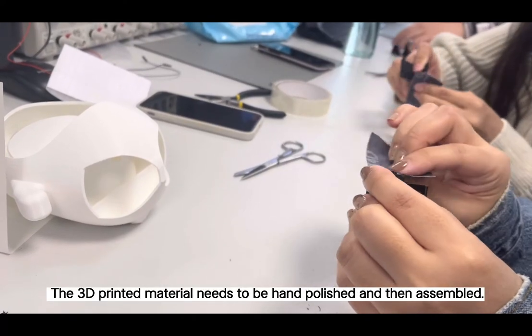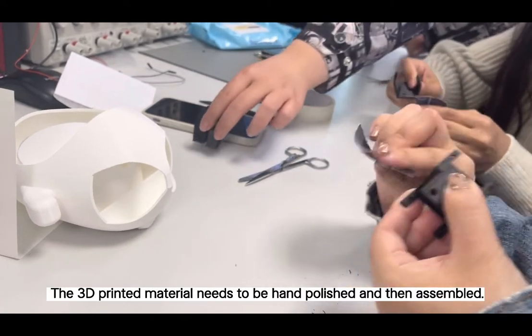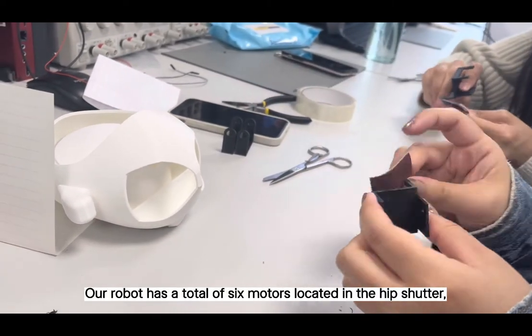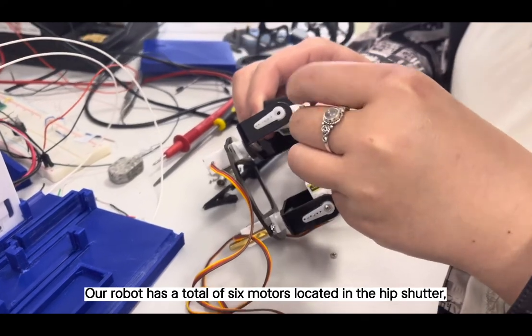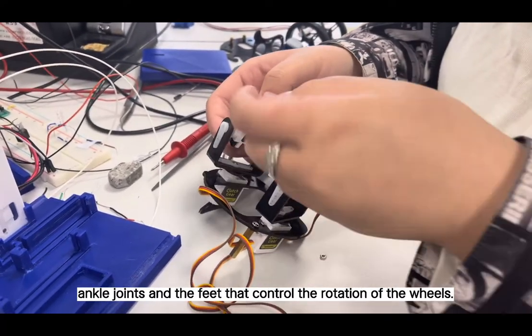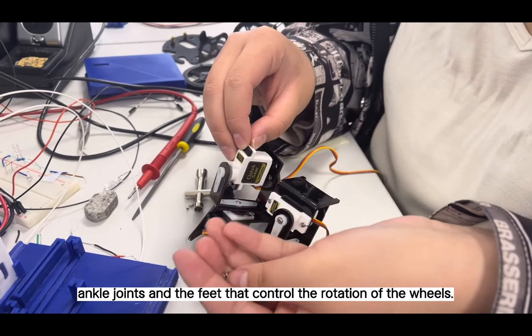The 3D printed materials need to be hand-polished and then assembled. Our robot has a total of 6 motors located in the hip, shoulder, trunk, and the feet that control the rotation of the wheels.